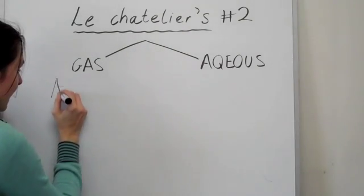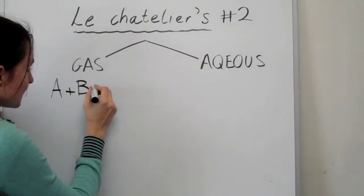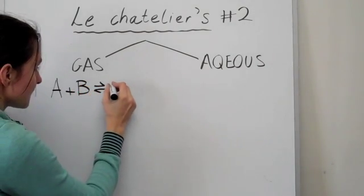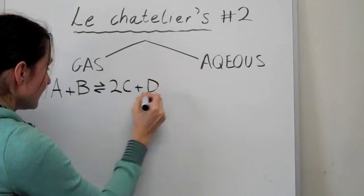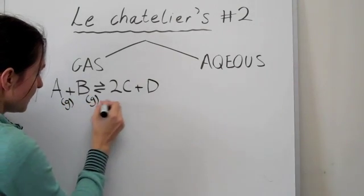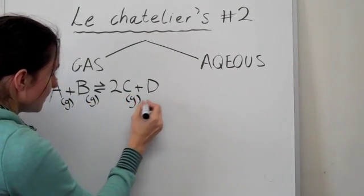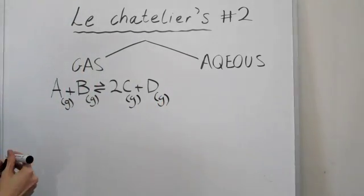Now, let's say we're going to modify our famous equation a little bit. We've got A plus B gives us 2C plus D. And let's say that all of these are in gaseous phase. And we'll make up our other equation soon.